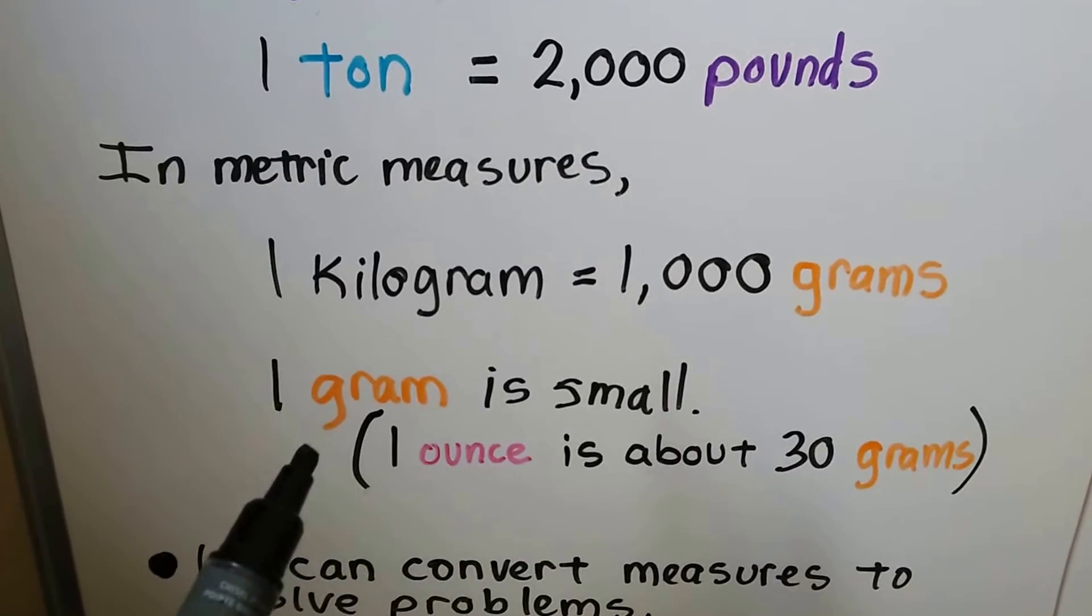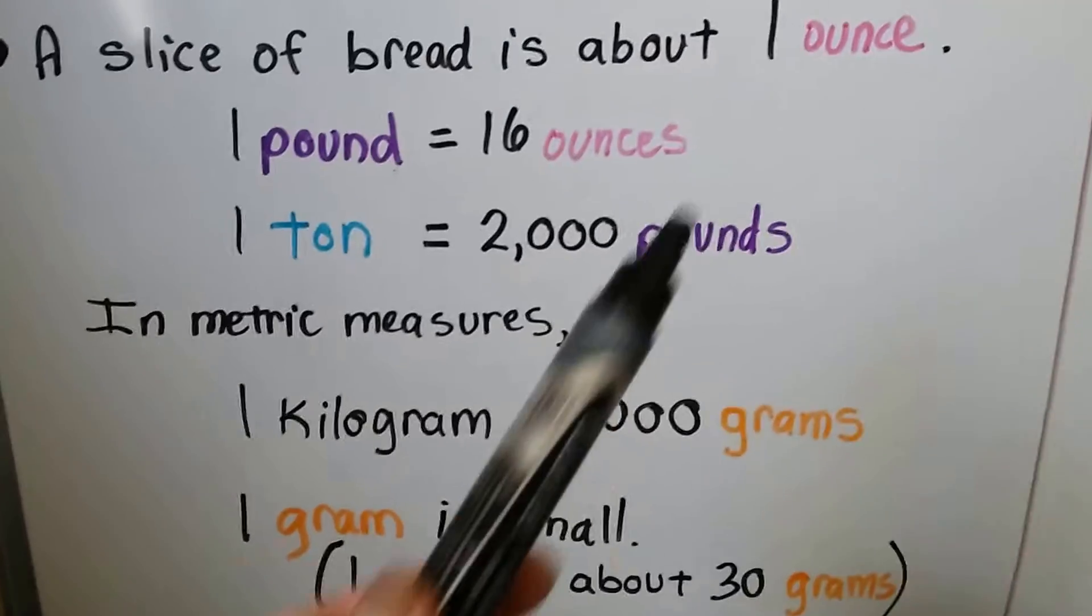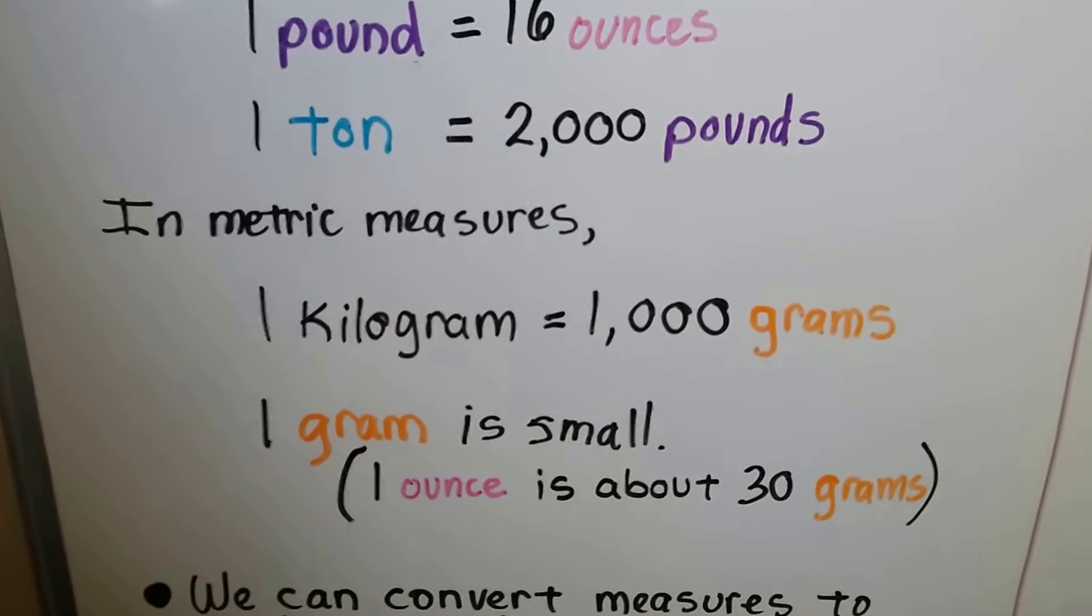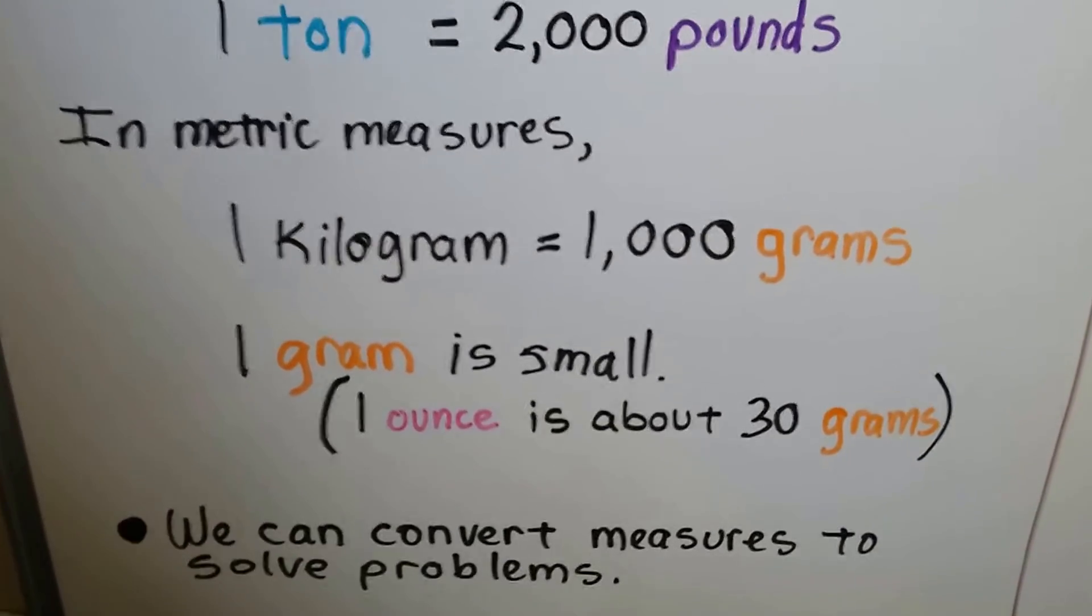And a gram is very small. One ounce, one of these ounces, like that slice of bread, would be about 30 grams, would be about 28 to 30 grams.